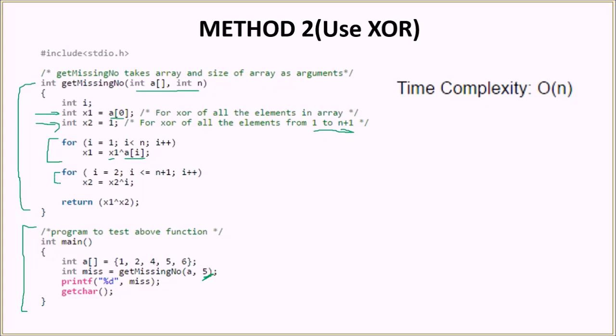As for the second loop, we are doing the XOR of all the elements from 1 to n plus 1. That is what we are doing here. And finally, as per the third step of the algorithm, we are returning the value X1 XOR X2 which will basically return to miss variable which we can print here.